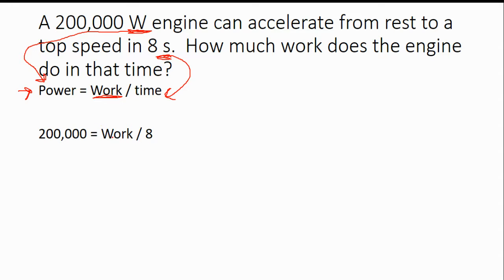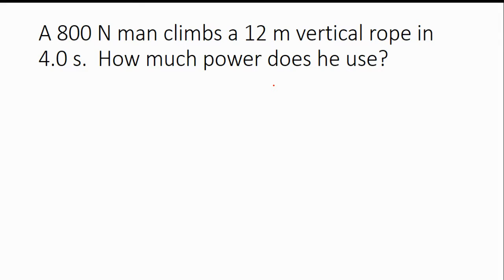Now, in order to solve for work, we have to get it by itself. So we have work divided by eight, which means we need to multiply by eight. And what you do to one side, you do to the other. So we have eight times 200,000 and you get 1,600,000 joules. And remember, joules is the unit for work. So we have 1.6 million joules. That is the amount of work that our engine did.